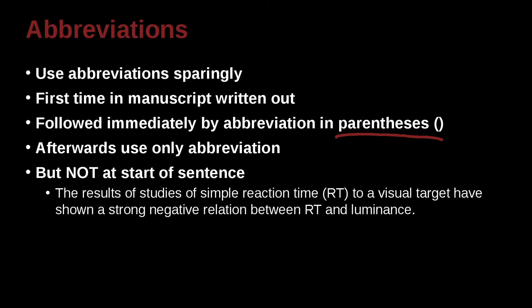Here's an example. The results of studies of simple reaction time, so here we have RT. What does RT mean? Reaction time. To a visual target have shown a strong negative relation between RT and luminance. So here we have the first time in my paper, the first time I've used reaction time. And what do I do? I write the whole thing out. Then inside the parentheses, I give you the abbreviation. Then every time later I use the abbreviation.